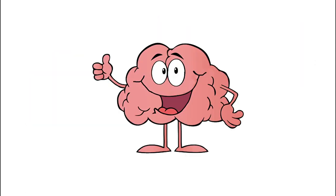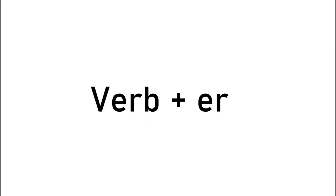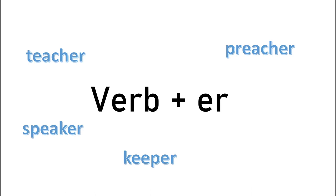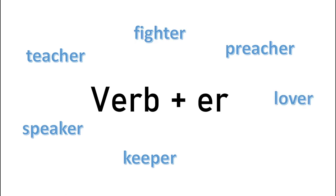Our brains are pattern-detecting machines, so much so that we often see patterns that aren't really there. The same is true for morphology, especially when a given pattern is very familiar to us. Take this structure for example: verb plus -er, as in teacher, preacher, keeper, speaker, fighter, lover, dreamer, and so on. This pattern is so ubiquitous that we often see it when it isn't really there.